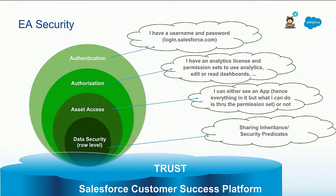If two users have access to the same app, one might run a dashboard and get 10,000 rows, while another gets 5,000 rows. That difference is determined by data security, or row-level security — the lowest level of data security. Some might also argue there is a fifth layer: column security, which is used in databases or as field-level security in Salesforce. We don't have that natively in datasets, but we can create multiple versions by slicing fields.